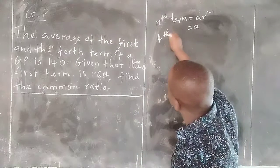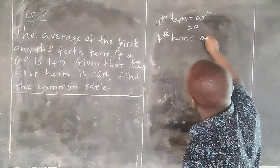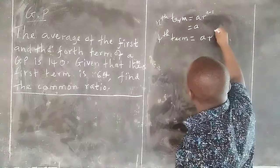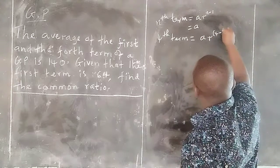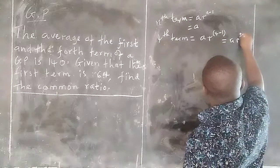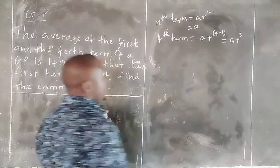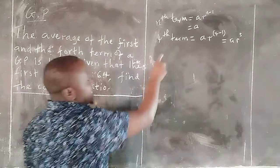For us to get the fourth term, then we take a, then r raised to 4 minus 1, which will be a r cubed. Therefore a r cubed is the fourth term and the first term is a.